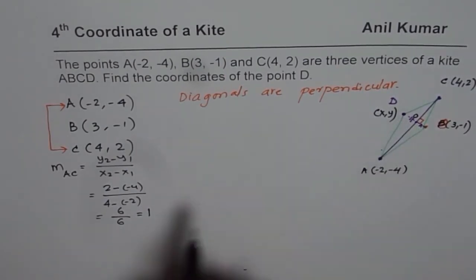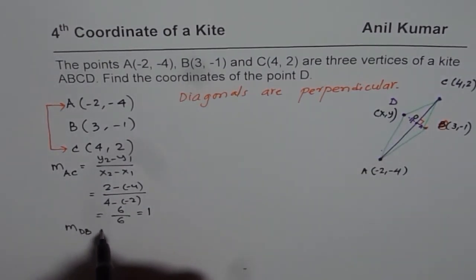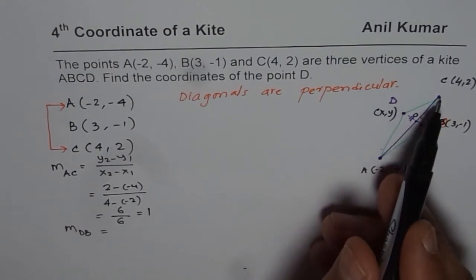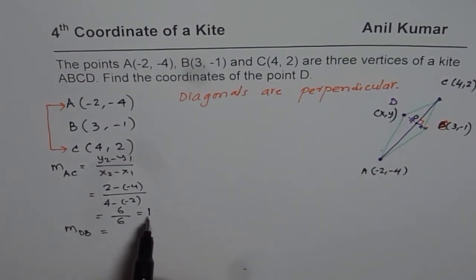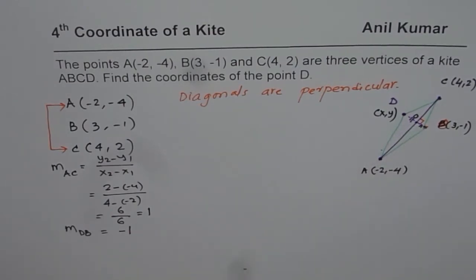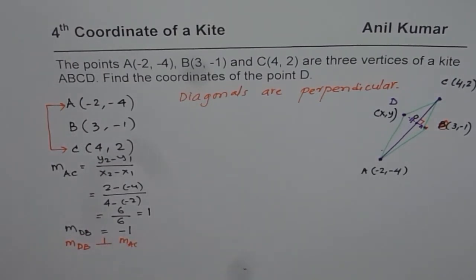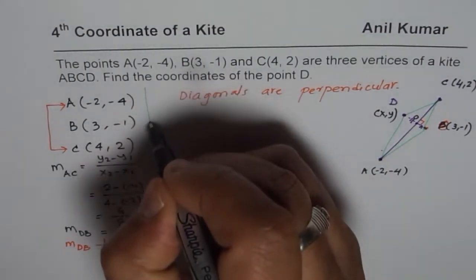Now, what should be the slope of line DB? Since DB is perpendicular to AC, it should be the negative reciprocal, which is -1. When you multiply these two slopes, since they are perpendicular, you get -1. So the slope of line DB is -1.